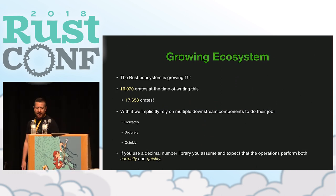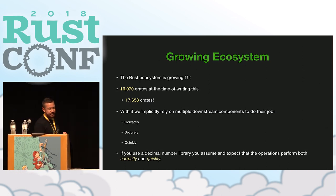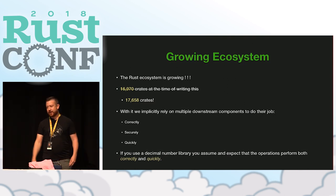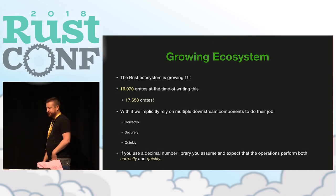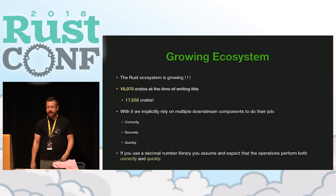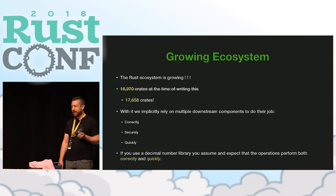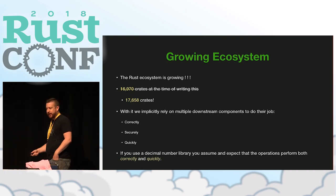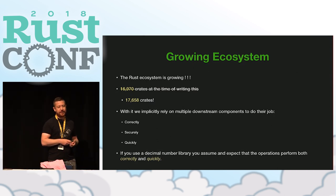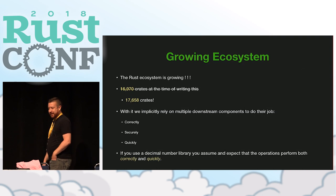On to the talk. The Rust ecosystem is growing — when I first put together these slides it was just under 17,000 crates, and this morning it was around 17,700. It's very soon going to be 18,000 crates. With all those crates, we're starting to use them in our projects, and we're implicitly relying on them and their downstream dependencies to do their job correctly, securely, as well as quickly.